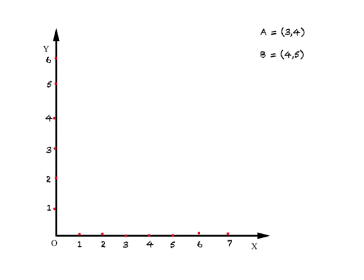This is called a two-dimensional diagram, something you must have seen when you were in school. On the horizontal axis we have the value of a variable which we'll call X, and on the vertical axis you have the values of a variable which we'll call Y.